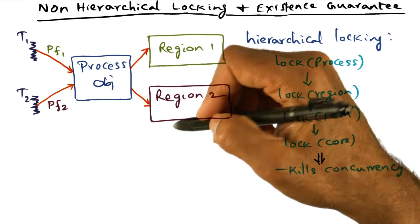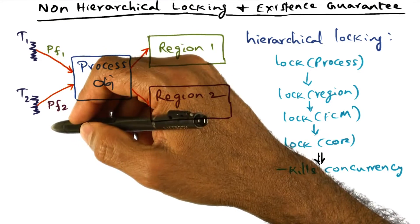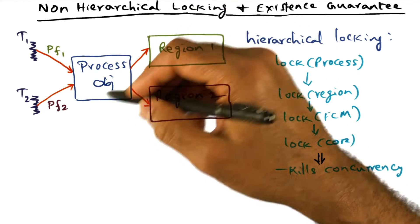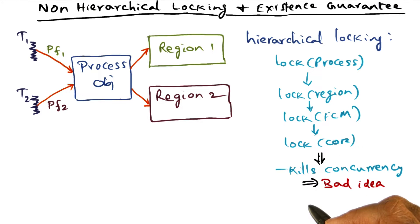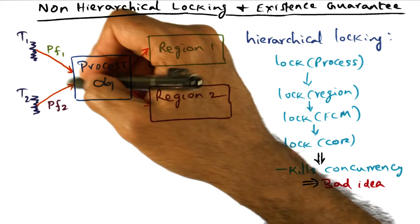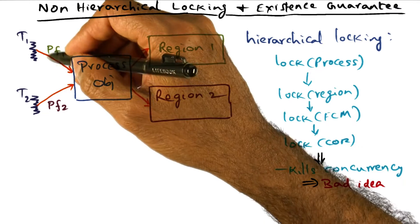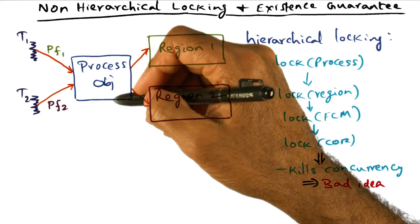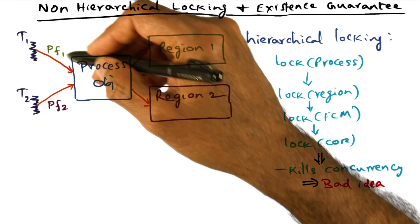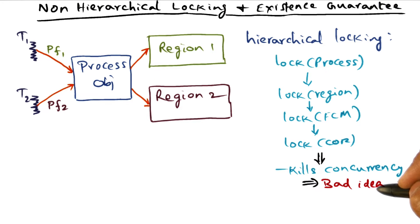But maybe this page fault is not for this region but for a different region — region two. If we have locked the process object in servicing the first page fault, then we cannot get past this process object because the lock is held. Therefore the operating system cannot process this page fault, even though you may have multiple cores and these threads are executing on different cores. You don't have the concurrency you wanted. So hierarchical locking kills concurrency — that's a bad idea. If the path taken by this page fault is different from the path taken by that page fault, why lock the process object in the first place?